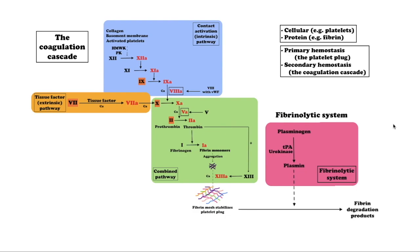Coagulation is the process by which a blood clot forms to reduce blood loss after damage to a blood vessel. Several components of the coagulation cascade, including both cellular and protein components, are involved in blood vessel repair. The role of these cellular and protein components can be categorized as primary hemostasis — formation of the platelet plug, which forms the primary clot — and secondary hemostasis, the coagulation cascade, which produces a fibrin mesh to strengthen the platelet plug.